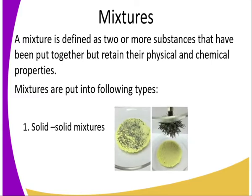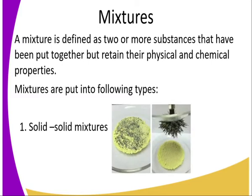Looking at the types of mixtures, number one we have solid-solid mixture — for instance, sulfur and iron filings. Both of them are solids and they can be separated using a magnet. The method of separation depends on the physical and chemical properties of the constituent substances forming the mixture.